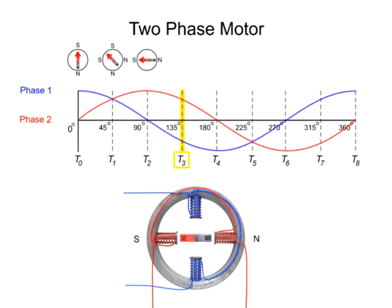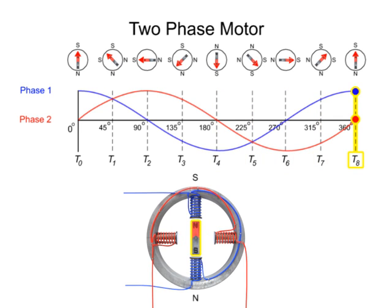At time 3, phase 2 has diminished current flow, while current flow through the vertical rotor coils increases and reverses direction. As the two sine waves continue to induce current 90 degrees out of phase, the rotor will spin and the motor will run, effectively transforming electrical into mechanical energy.